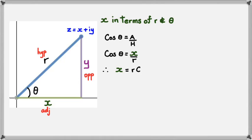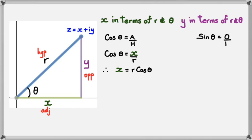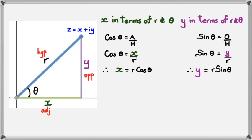Rearranging, we get x equals R cos theta. Now we do the same for y in terms of R and theta. Y is the opposite side and we're working with opposite and hypotenuse, so sine theta equals opposite divided by hypotenuse. That gives us sine theta equals y over R, and rearranging, y equals R sine theta.